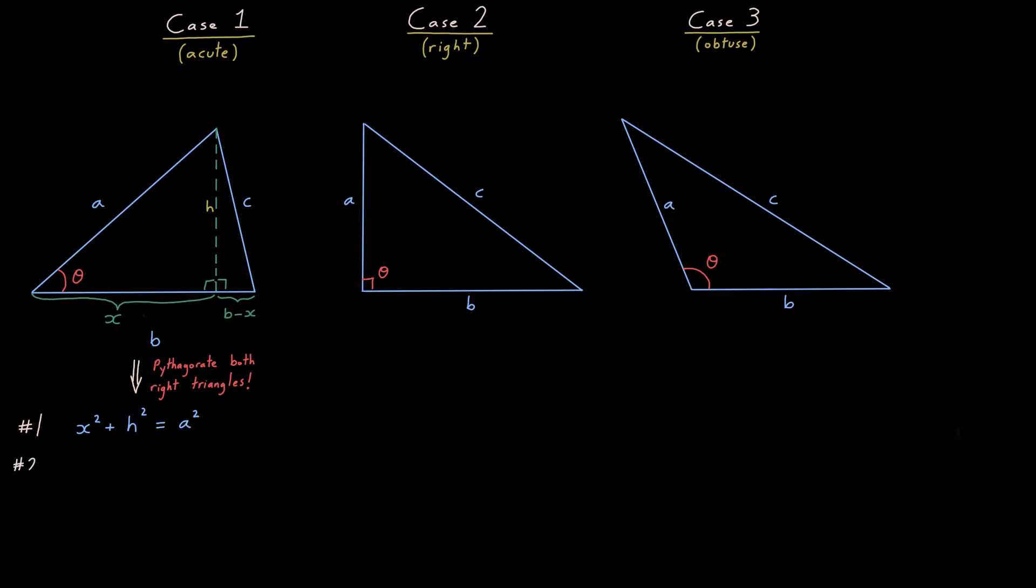So let's Pythagoras the left one first, we'll call that number one. X squared plus H squared has to be A squared. And number two goes like so.